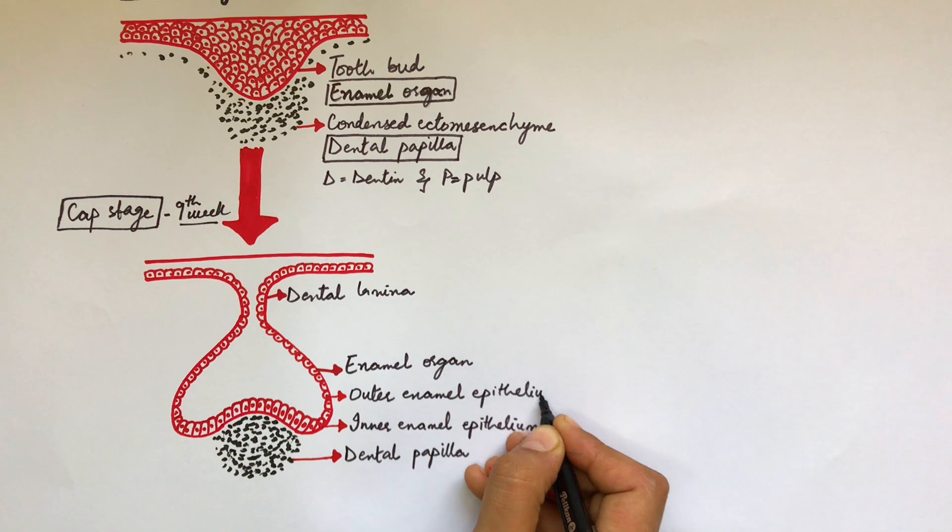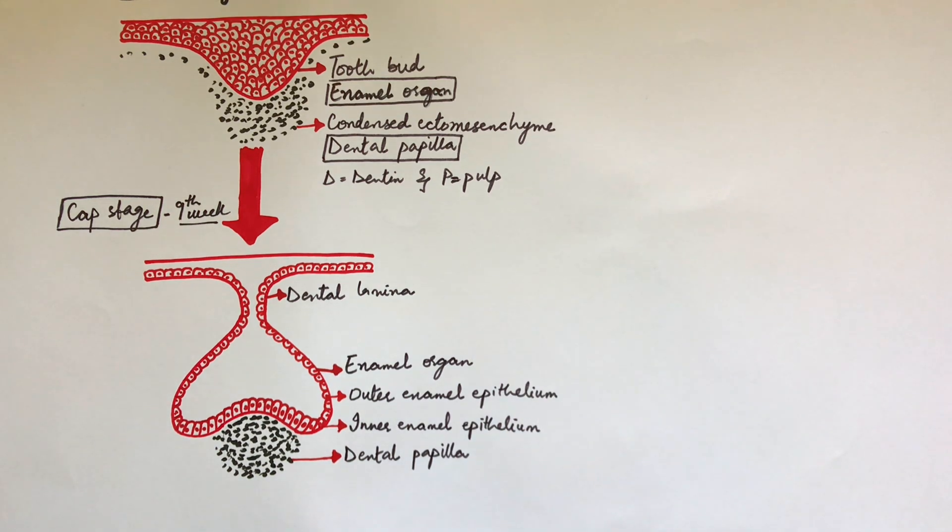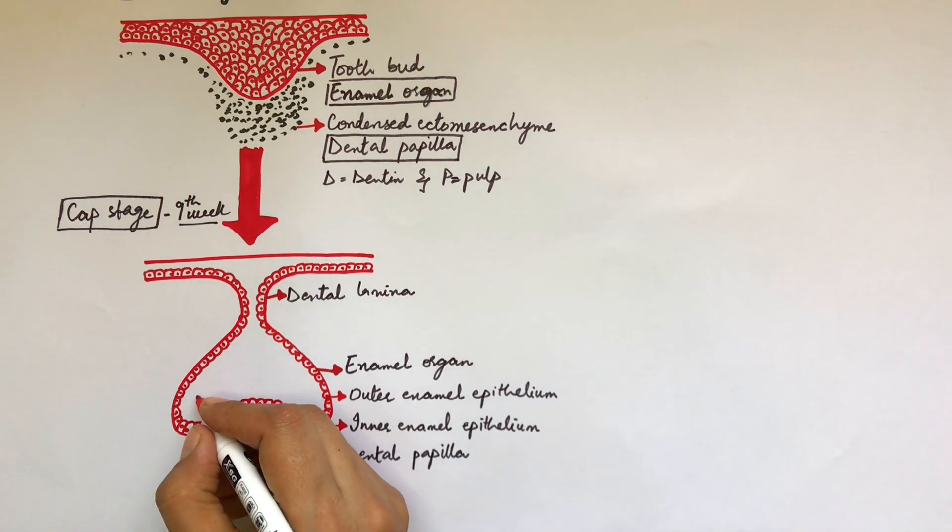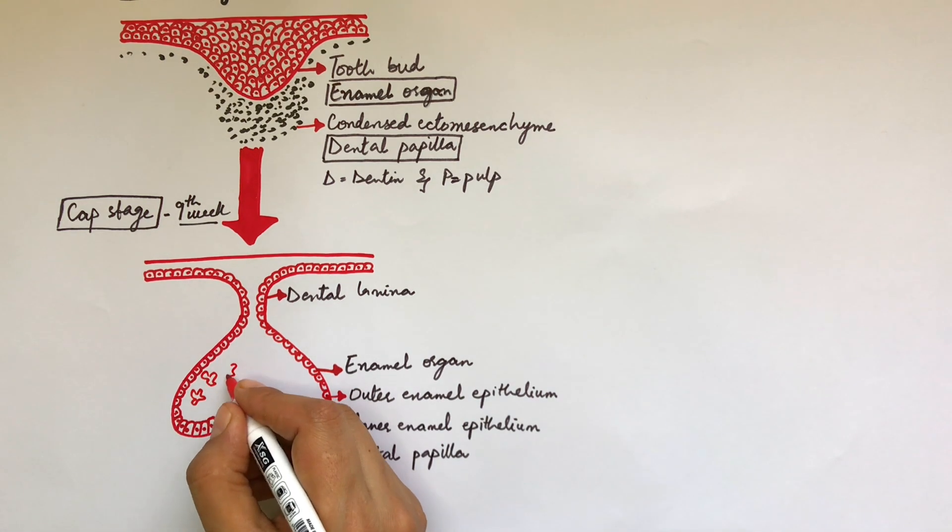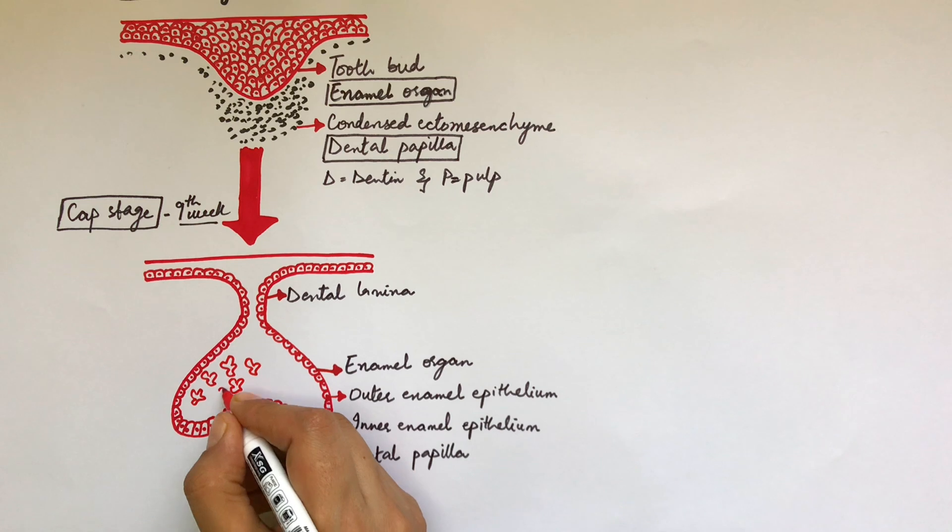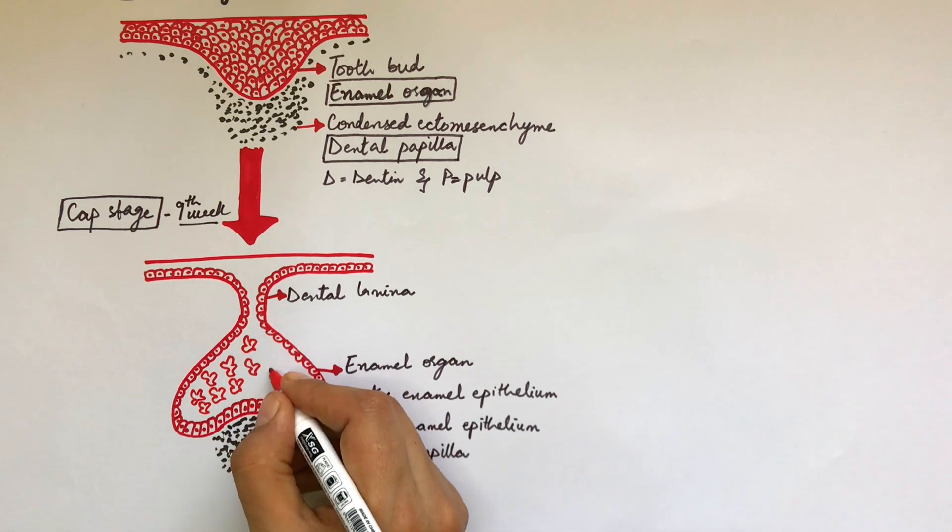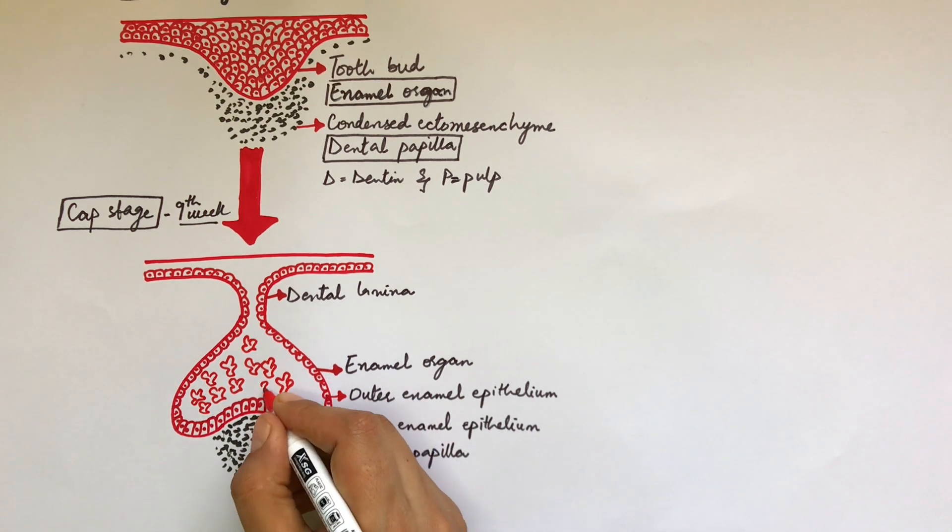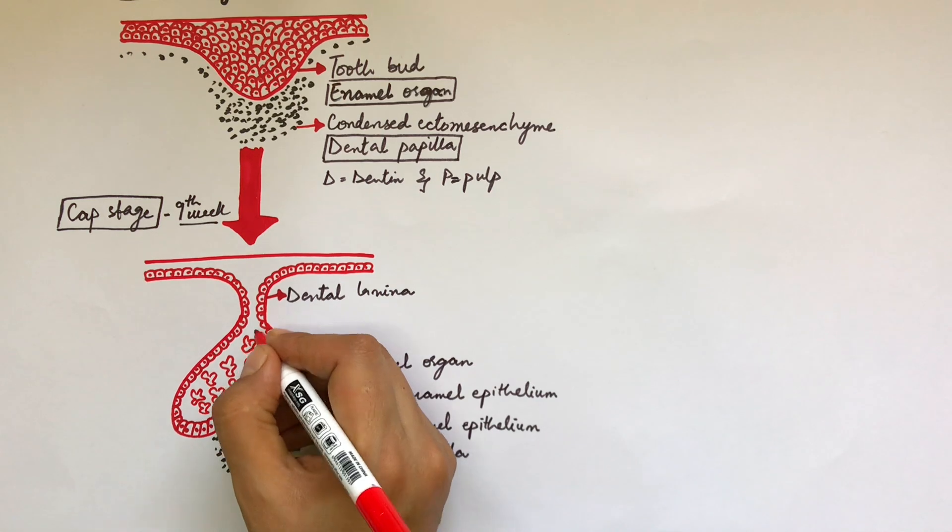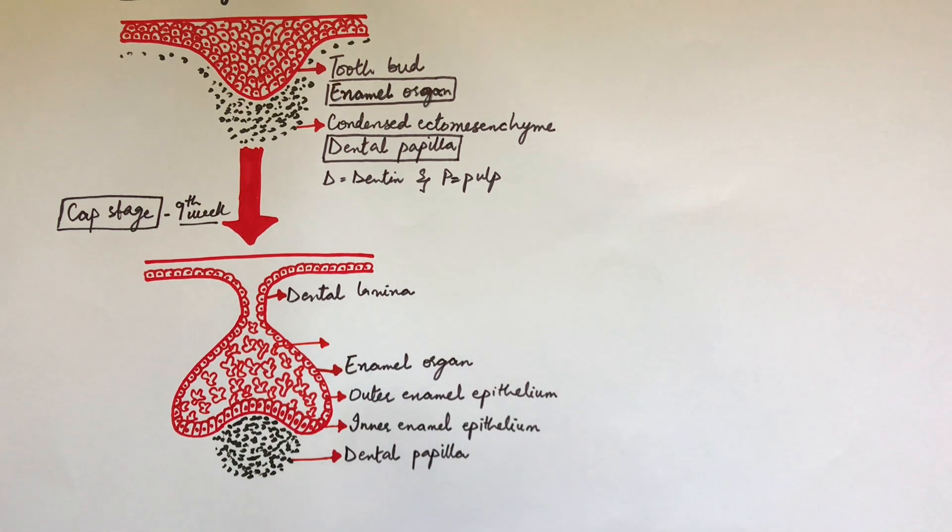The cells present in between the inner and outer enamel epithelium secrete glycosaminoglycans into their extracellular compartment. These molecules of glycosaminoglycans are hydrophilic and as a result, they pull water from their surroundings into the enamel organ causing the cells to force apart. As a result, the cells become star-shaped and are now called the stellate reticulum.